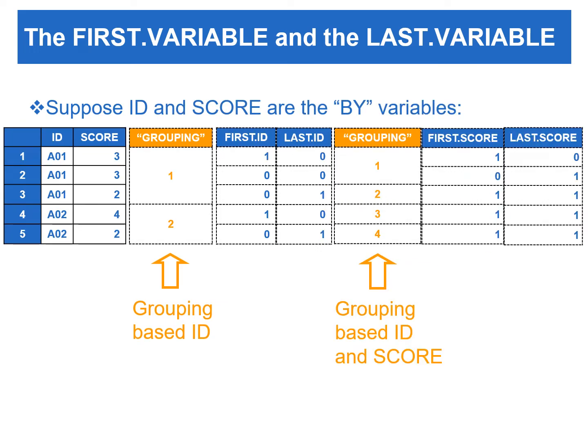When there are multiple variables designated as by-variables, a by-group would be a group of records with the same combination of values of these by-variables, with each by-group containing a unique combination of values for the by-variables. For example, if we use ID and score as the by-variables, then in addition to first.id and last.id, first.score and last.score will be created in the PDV. There will be four by-groups based on unique combination values of ID and score.